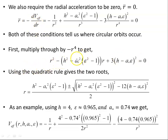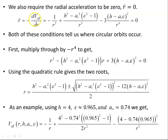Here's our equation, set to zero. Here's our quadratic. Using the quadratic formula we produce two roots — two solutions, two points where this derivative of the effective potential is equal to zero, corresponding to a local maximum and a local minimum.